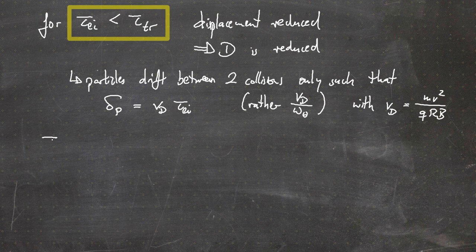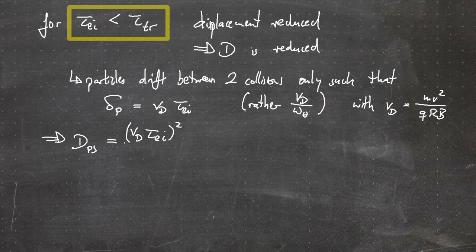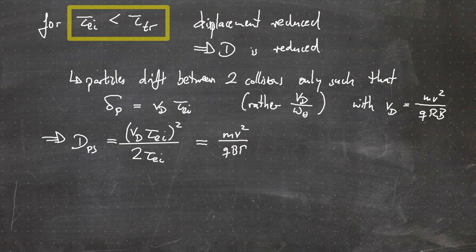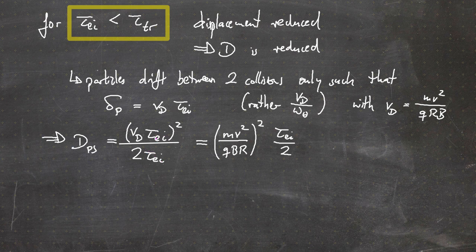Inserting this results in a diffusion coefficient for the Pfirsch-Schlüter regime equal to: (drift velocity times tau_ei)² over two times tau_ei. Inserting for the drift velocity we can write (m*v² over q*B*R)² times tau_ei over 2, since one of the tau_ei's in the numerator cancels out.